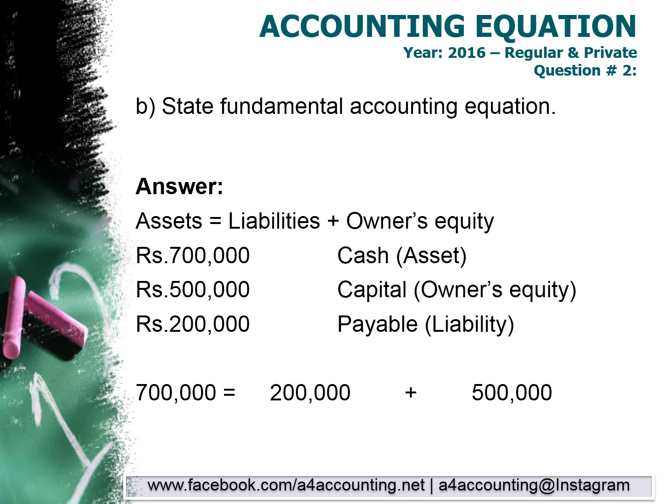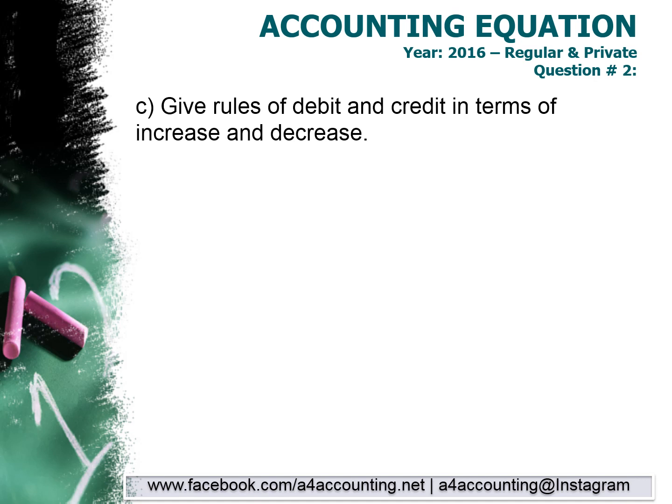For example, if assets are seven lakh rupees, liabilities are two lakh rupees, and capital (owner's equity) is five lakh rupees, then seven lakh is formed as two lakh plus five lakh. This verifies the accounting equation: Assets is equal to Liabilities plus Owner's Equity. The balance sheet format you have made also reflects this — all assets on the left side and liabilities plus owner's equity on the right side, and both sides total equally.